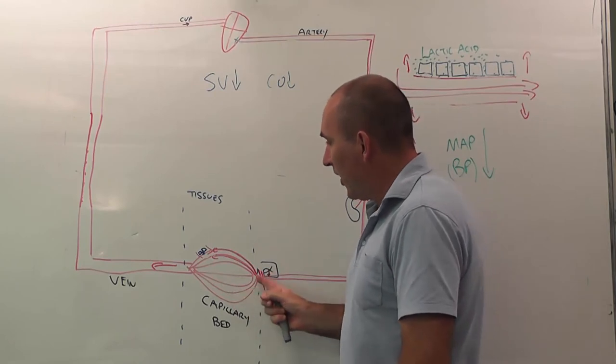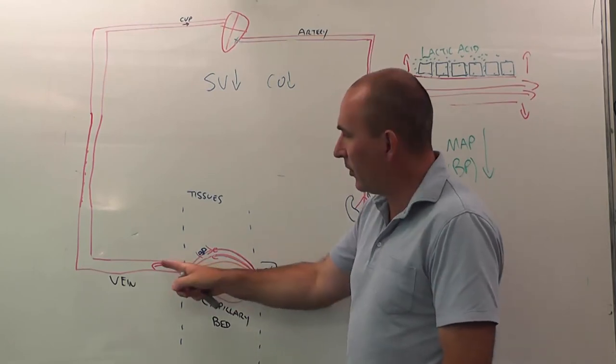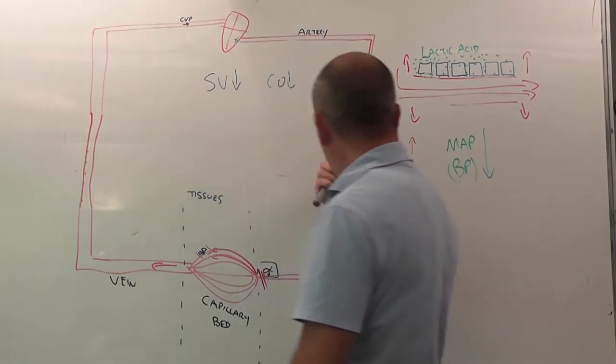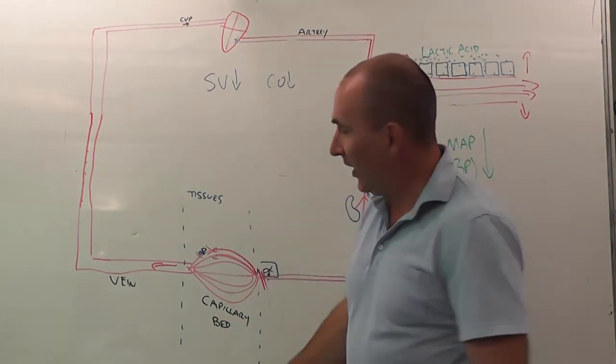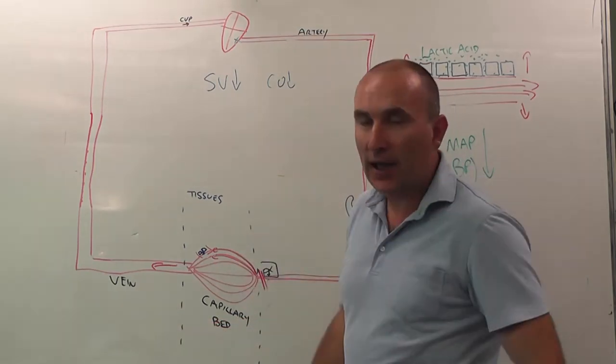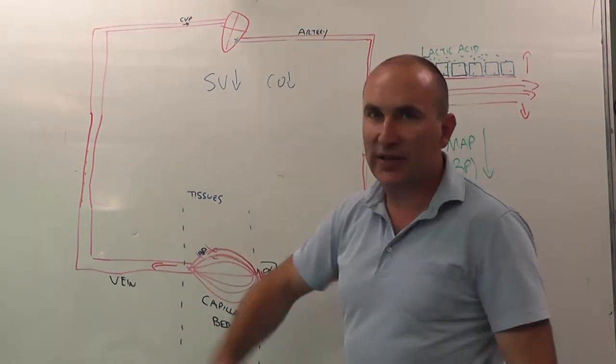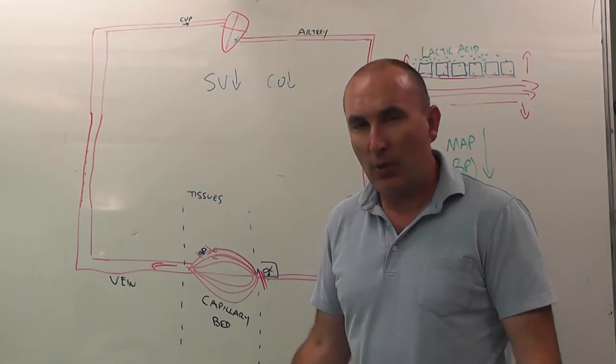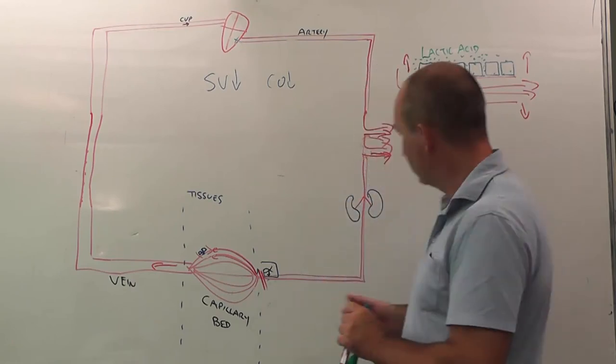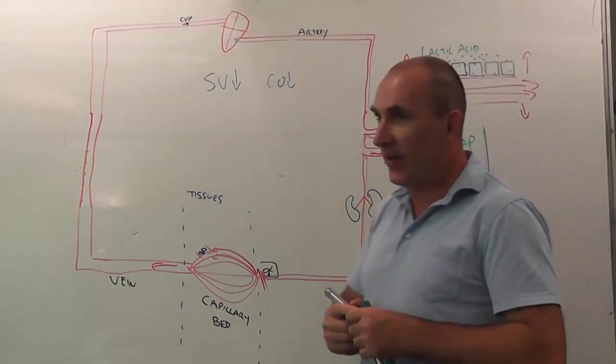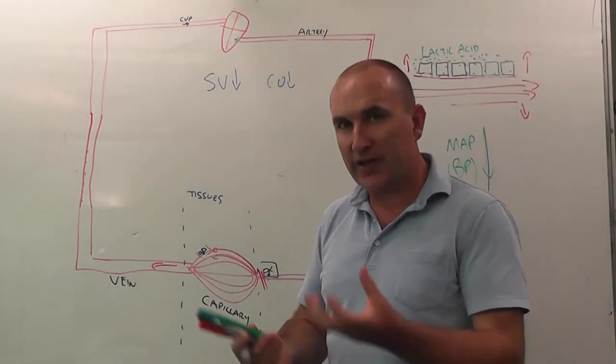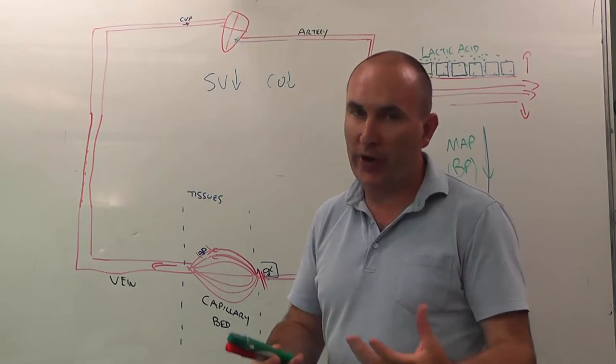And that is, we have vasodilation. So that 6 litres of blood that our patient had before it got hurt became 3 litres of blood. And now we open up the capillaries again. That 3 litres goes back into a 6 litre space. What happens to blood pressure?